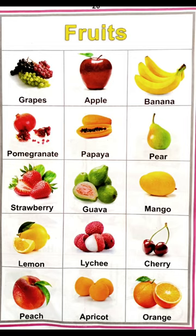Hello everyone, today we are going to talk about the names of fruits. First picture is grapes, apple, banana, pomegranate, papaya, pear, strawberry, guava, mango, lemon, lychee, cherry, peach, apricot, orange. Thanks for watching.